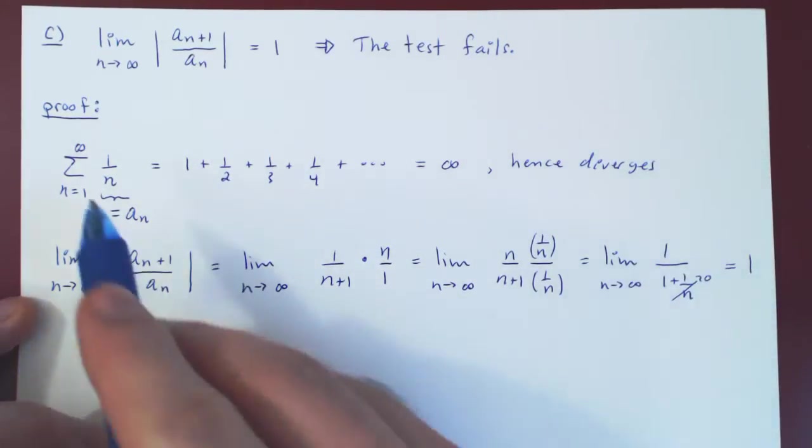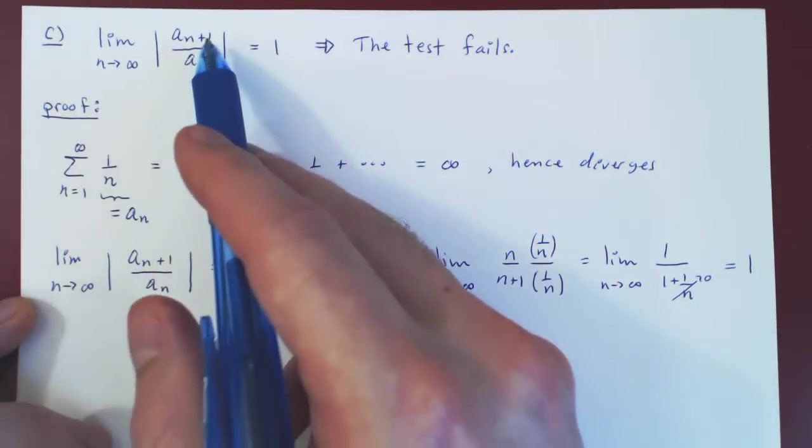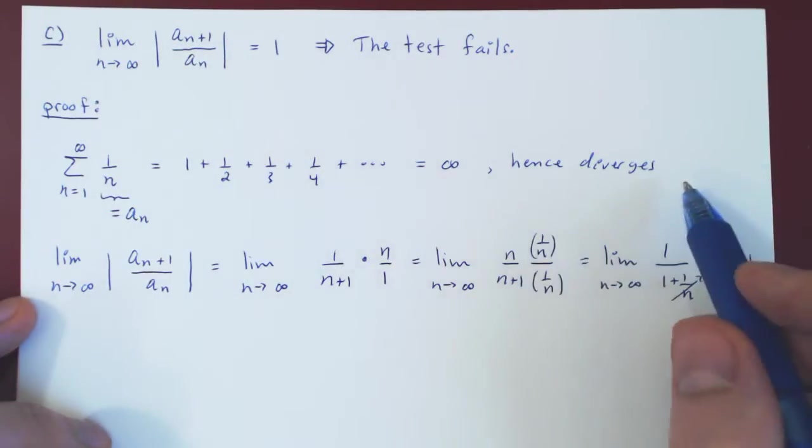So you see, here's an example of a series where the ratio test returns a limit of 1 and the series diverges.